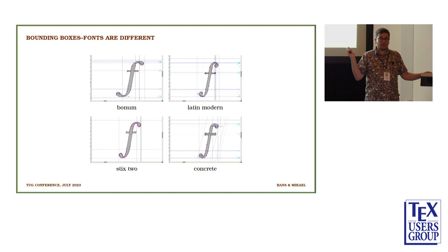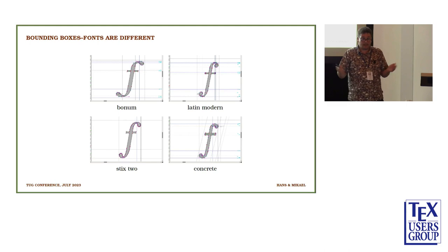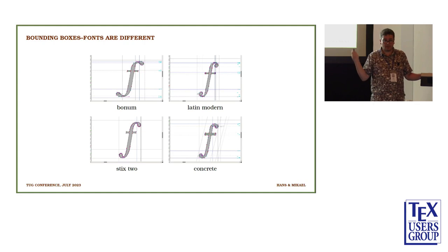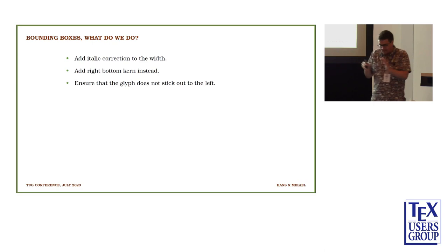This is just to show that the different fonts behave differently. I don't know how well you see the vertical lines. But you can see that Bonum has a lot of italic correction. Latin Modern has a little. Stix does not have maybe a little, concrete somewhere as well. Lucida has no italic correction. The boxes are slightly different. So the fonts are different when they come.